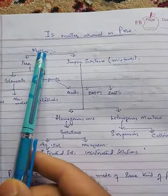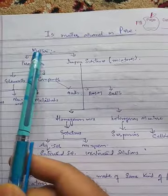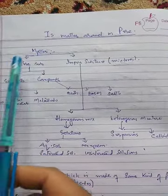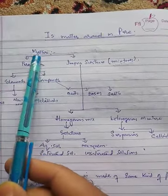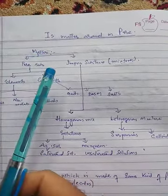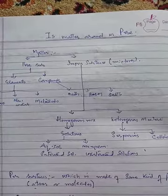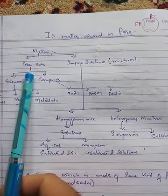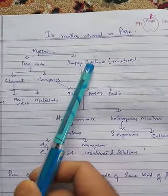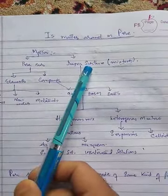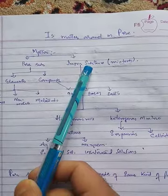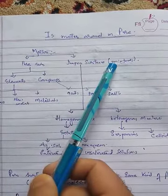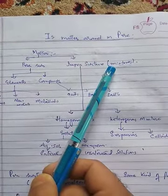In this lesson we will first categorize matter into two parts. We can categorize matter into pure substances and impure substances. Impure substances are also called mixtures.